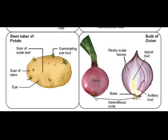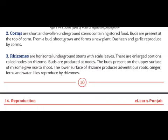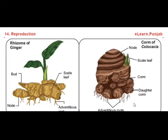The next method is corms. Corms are short, swollen underground stems containing stored food. Examples include garlic and colocaceae plants. Garlic, a common vegetable, reproduces by corms using this method.